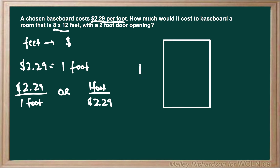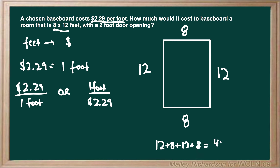This room is 8 by 12 feet, so we would have 12 feet, then 8 feet, then 12 feet, and 8 feet again. The baseboards only go on the perimeter of this shape, so we have to add up all these side lengths. We get 12 plus 8 plus 12 plus 8, which gives us a perimeter of 40 feet.